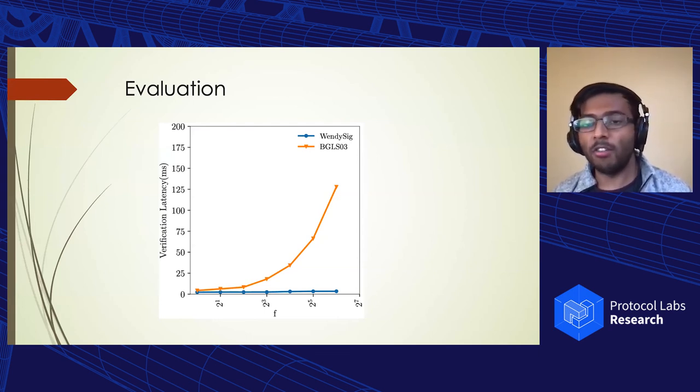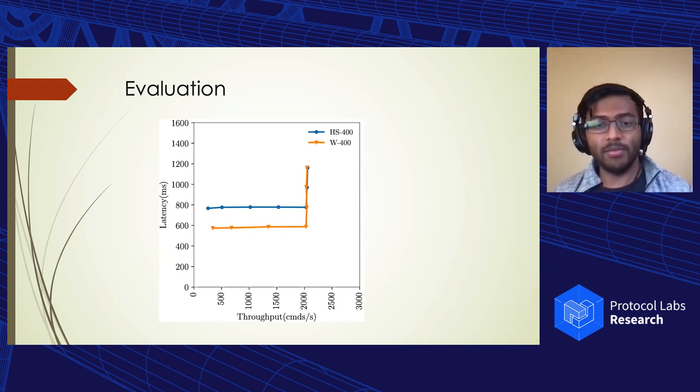I wasn't lying here when I'm telling you that these aggregate signature schemes are very costly. For F equals 64, you can see our scheme takes three milliseconds versus 127. And a brief discussion about our WENDY protocol, here's a latency throughput graph in the wide area that shows by leveraging these no-commit proofs, we can actually achieve about 33% lower latency with comparable throughput. More details are in the paper, this is in a wide area setting with a batch size of 400 as a quick example here.